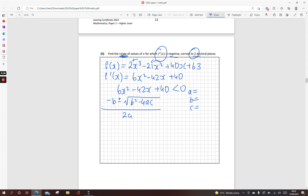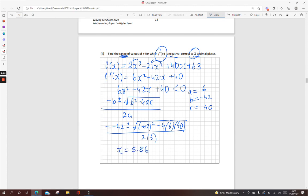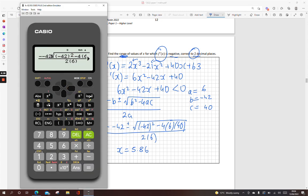So my a is 6, my b is minus 42, and my c is 40. Throw that all in. Just type it as you see it. Now we're not expecting a nice answer. Two decimal places, so 5.86 is one of my answers. Go back, change that plus to a minus, and 1.14.